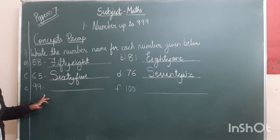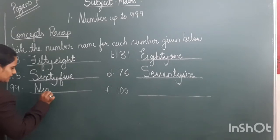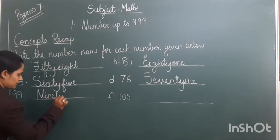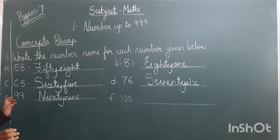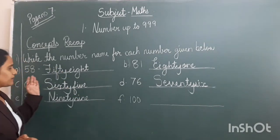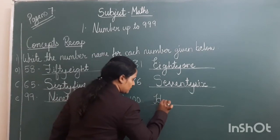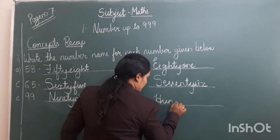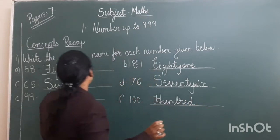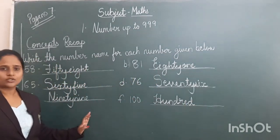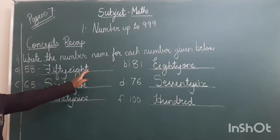99. Whenever it says you have to write the number name, that means notation. 100. This way you have to write in your test book. You have to touch the line and write the number name.